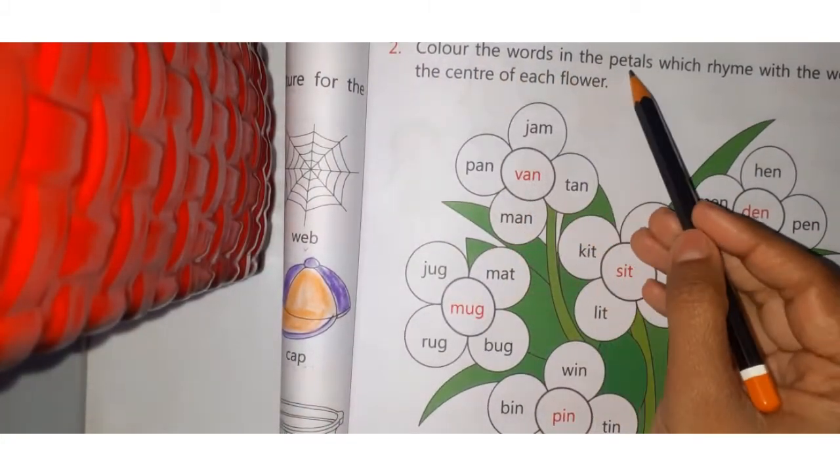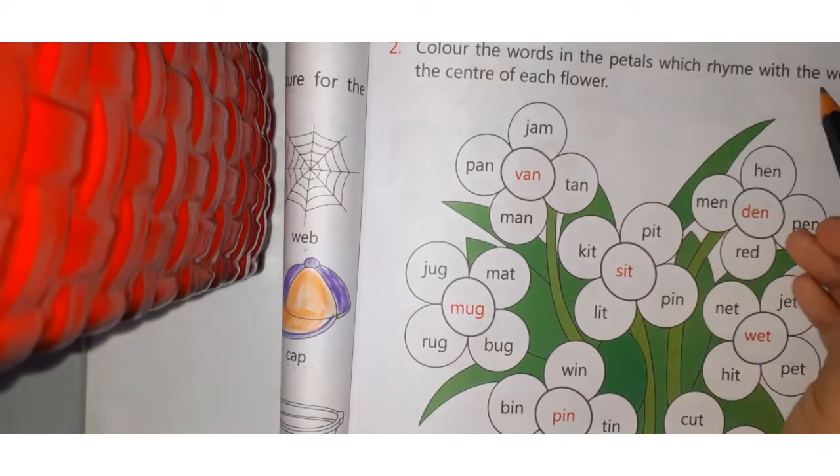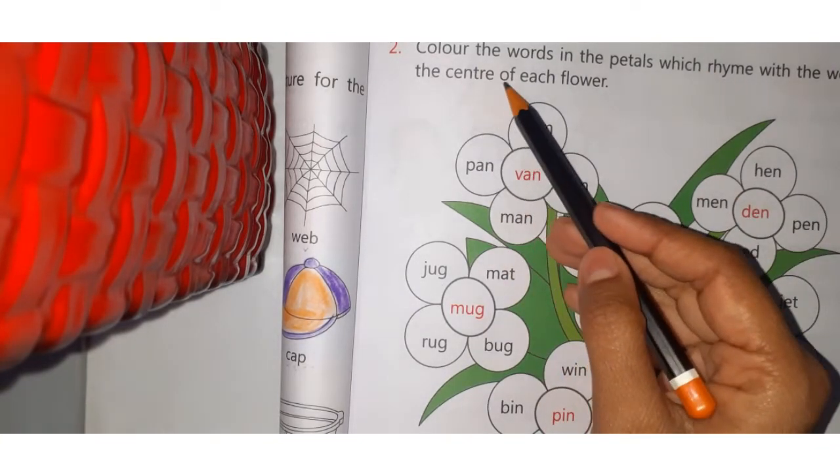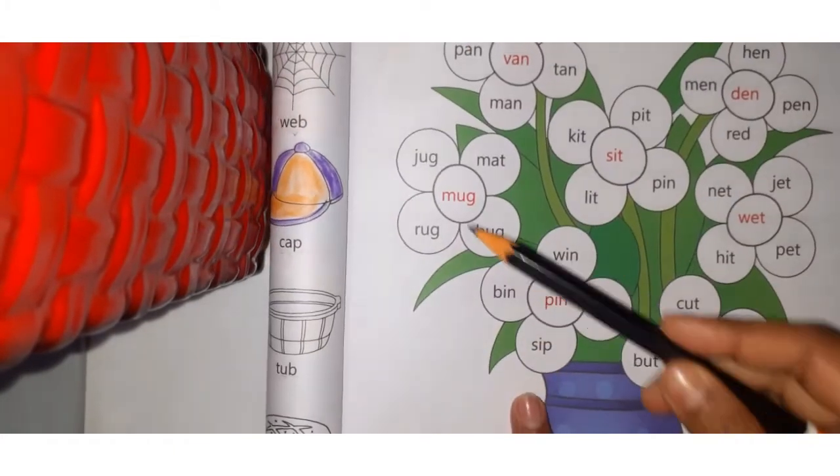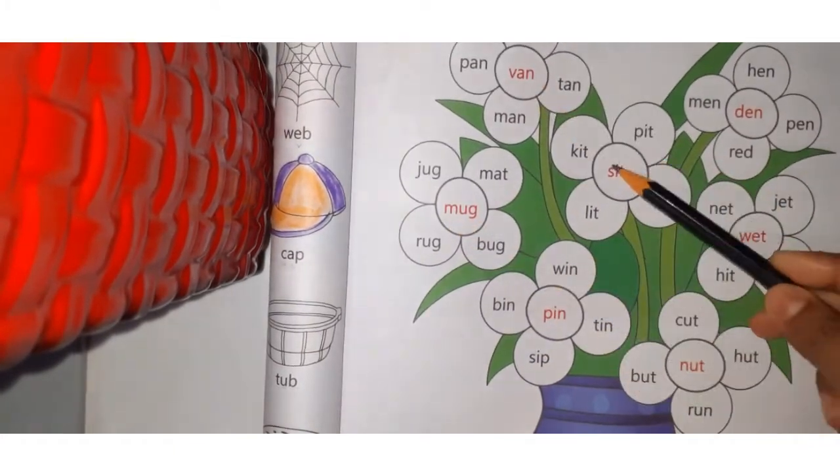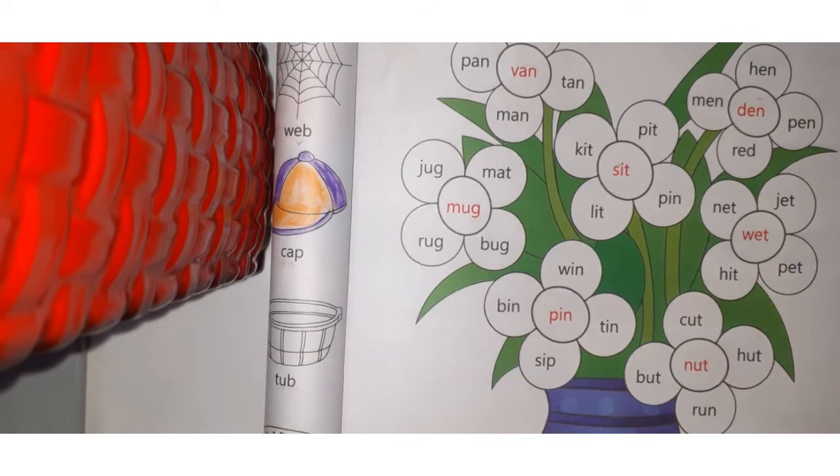Color the words in the petals which rhyme with the words in the center of each flower. See how many flowers are there. Let's count: 1, 2, 3, 4, 5, 6, 7. There are 7 flowers.